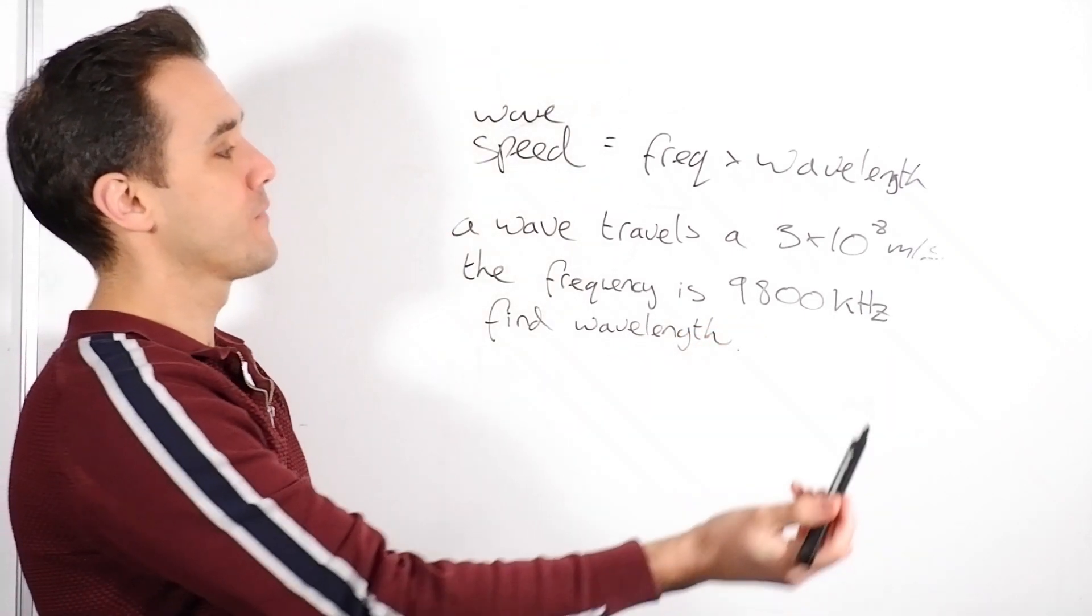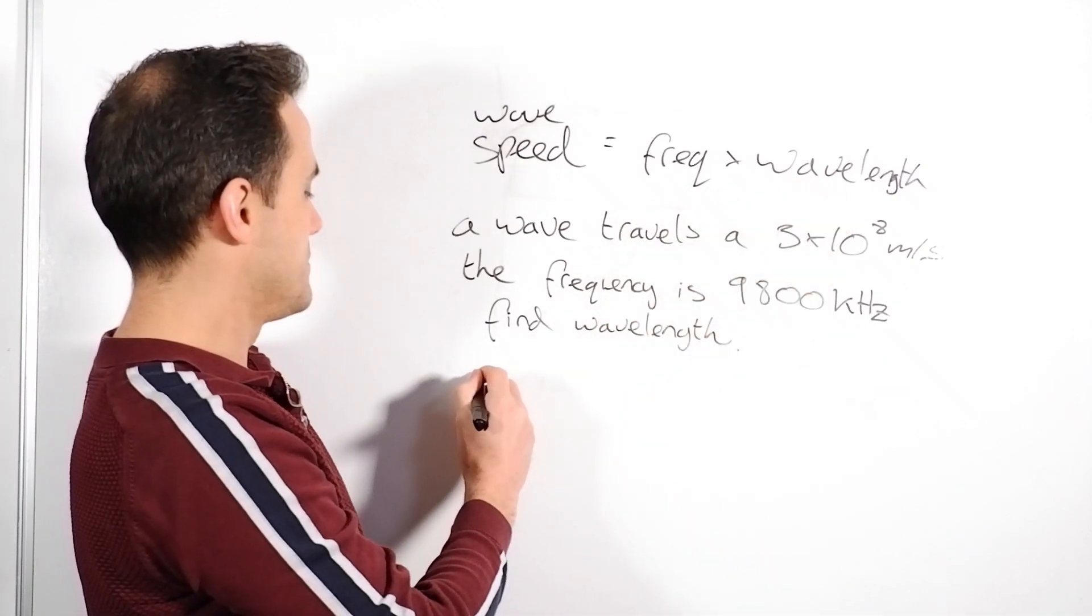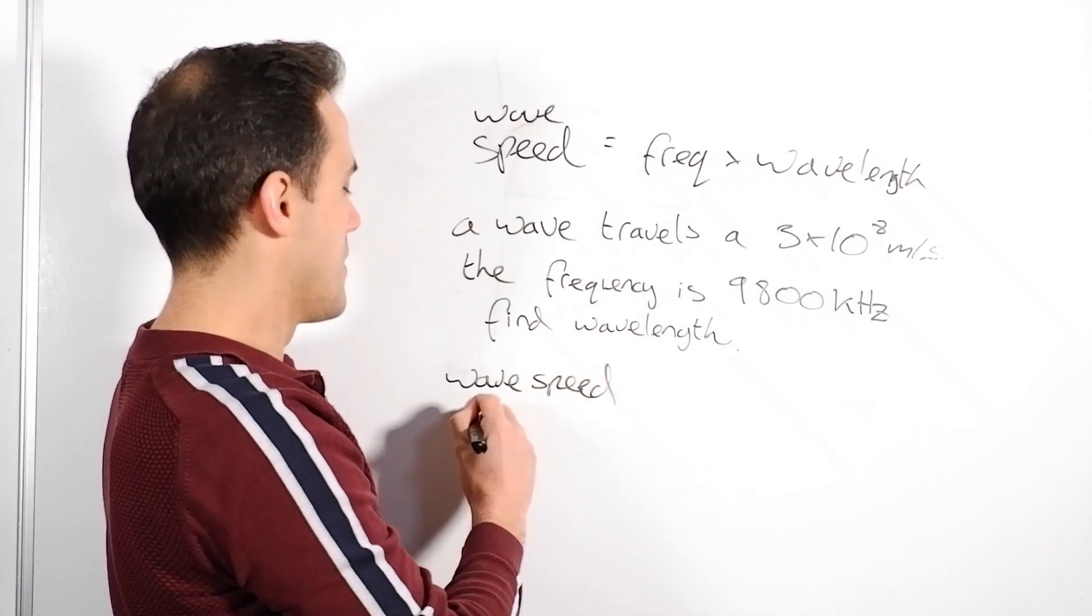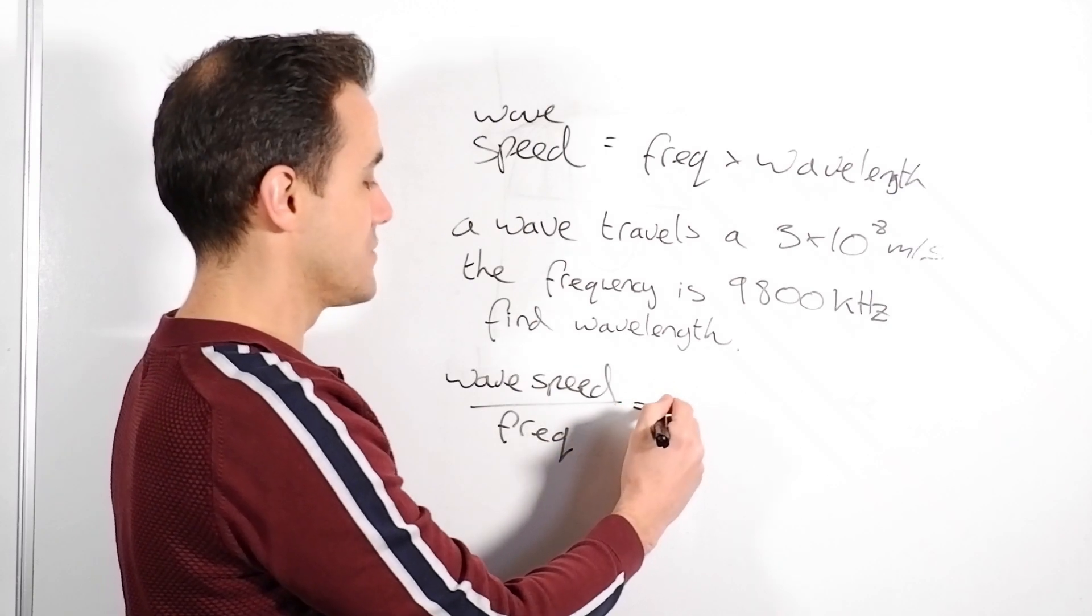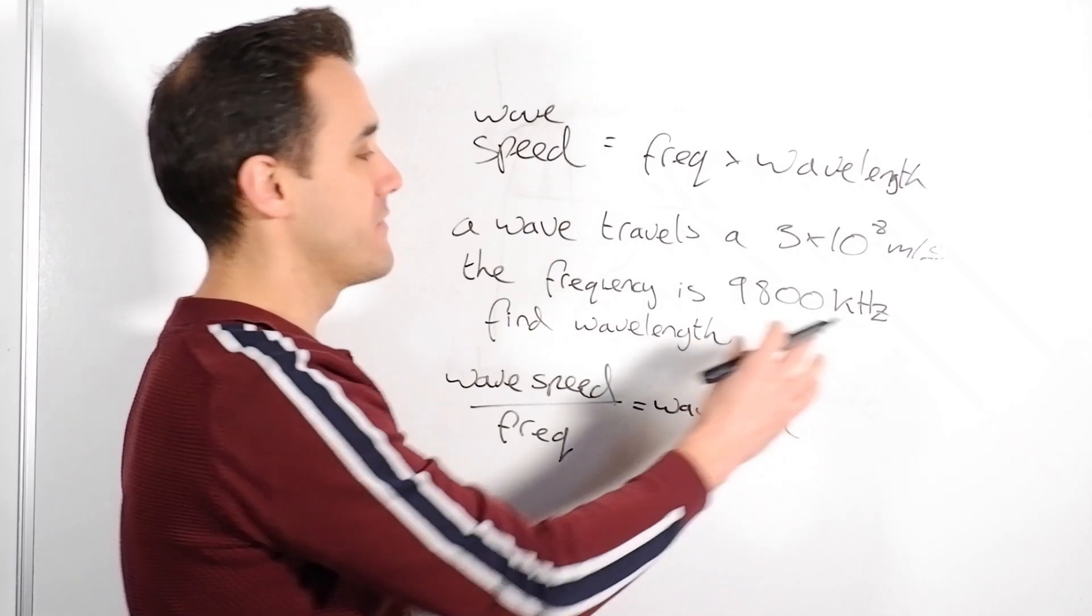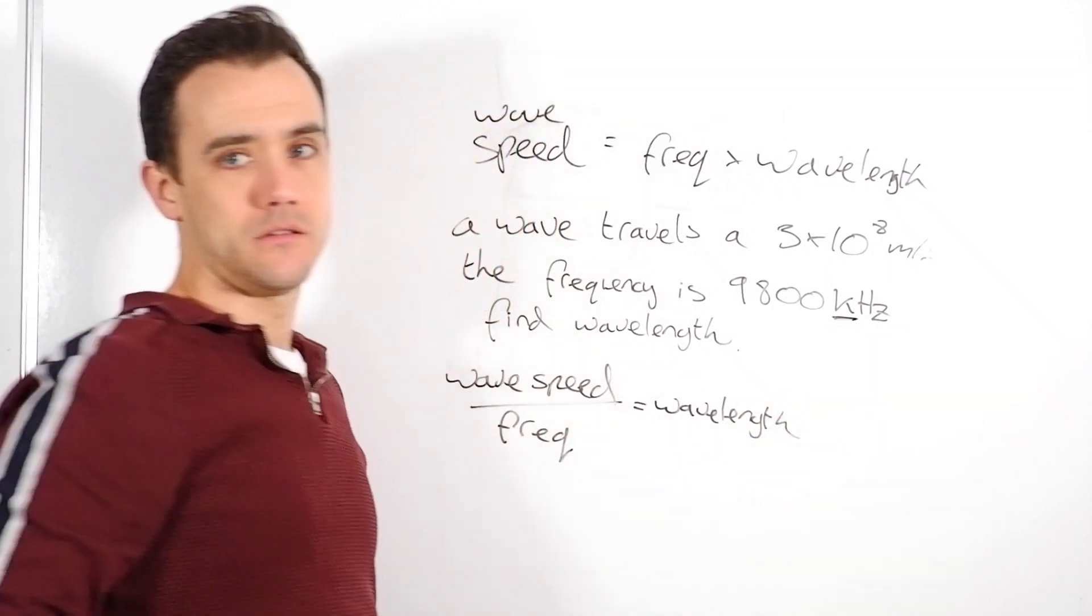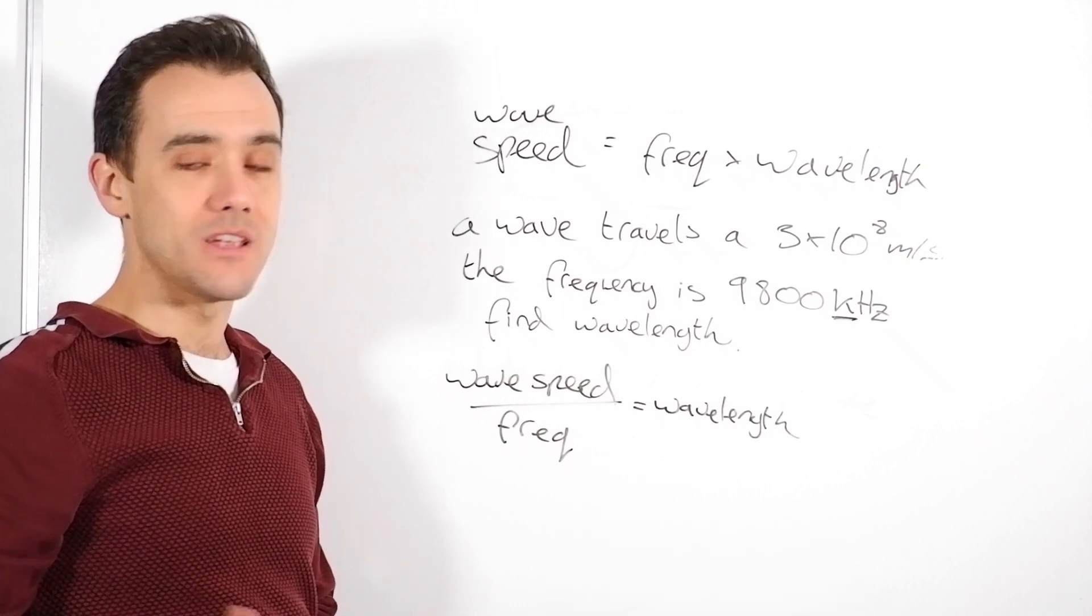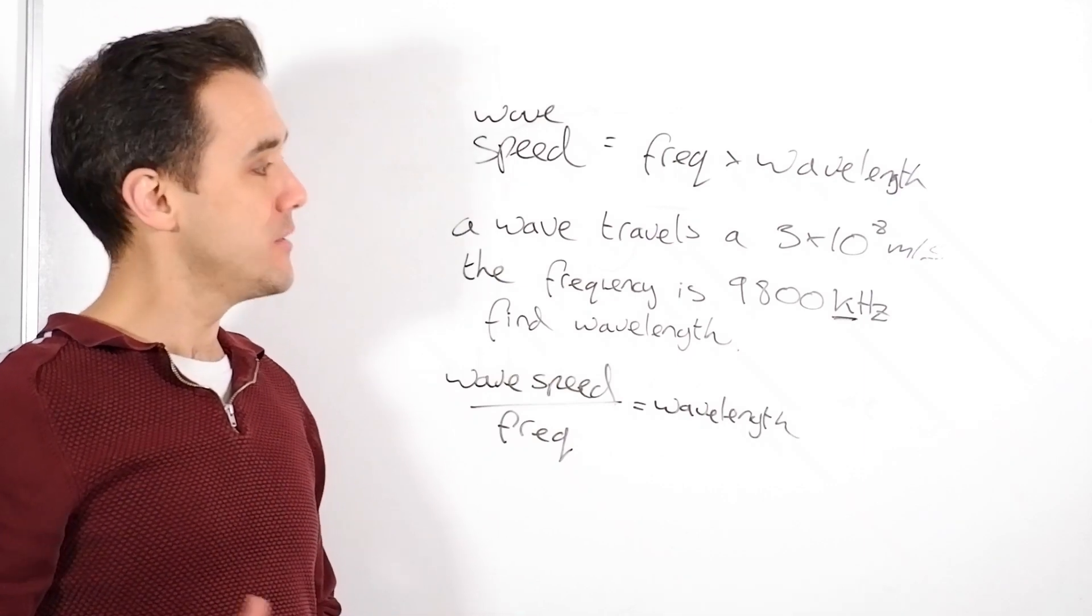Okay? Common mistake here. We rearrange this to find what wavelength is. We find its wave speed over frequency. That's fine. No mistakes there. So, that's going to tell us our wavelength. However, the mistake people make is here. It's this killer. Using your units properly. What's kilohertz? Well, kilohertz is a thousand hertz. Same way a kilometer is a thousand meters. So, we need to convert that. It's up to you how you do it.